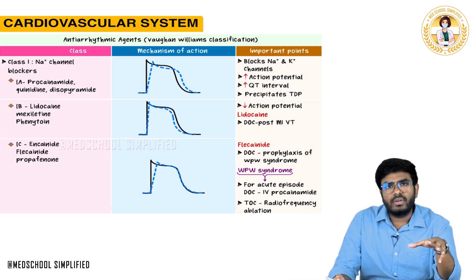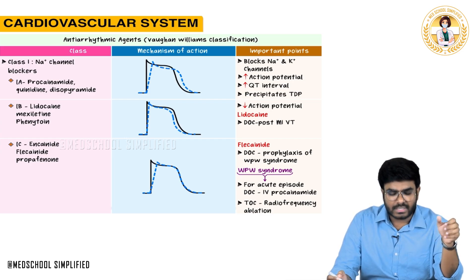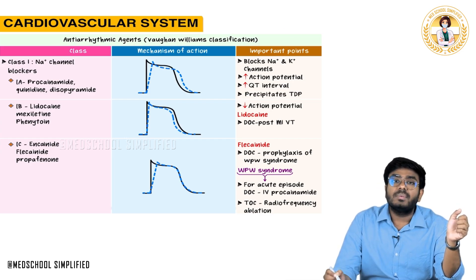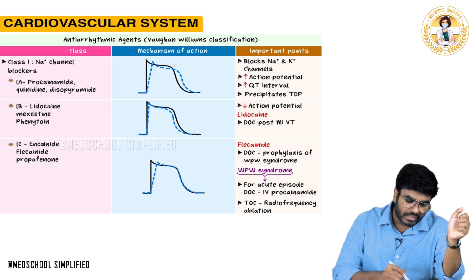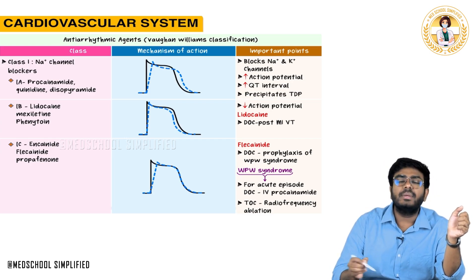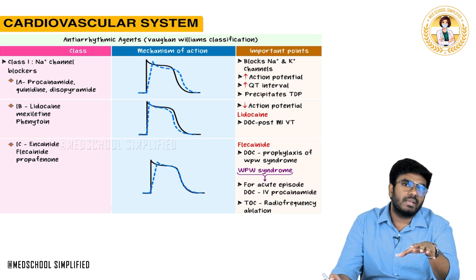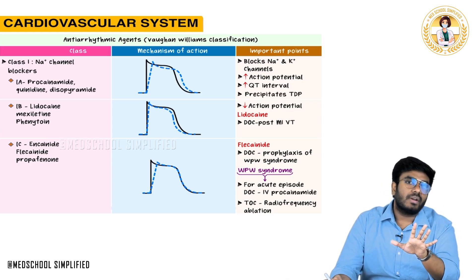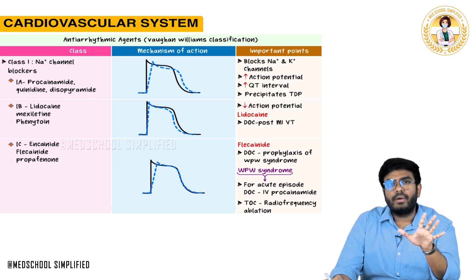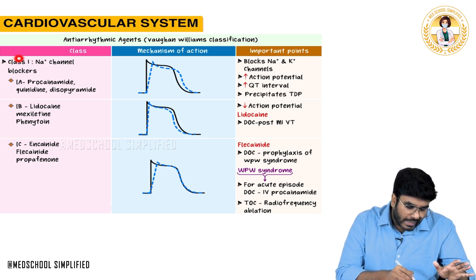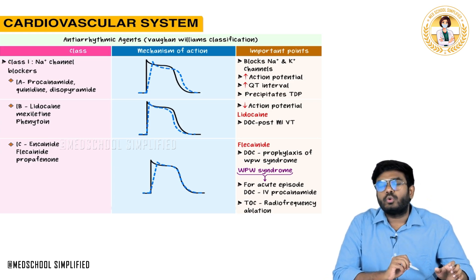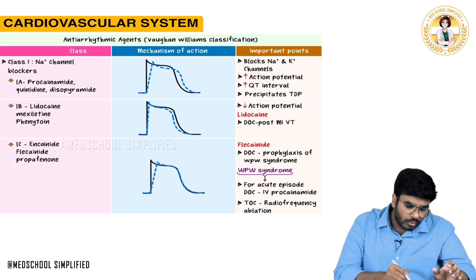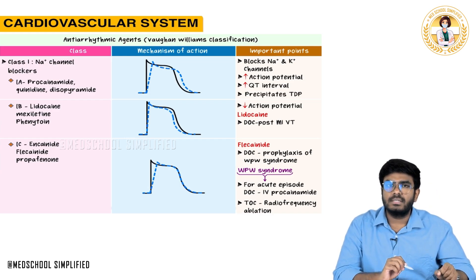The classification we follow for anti-arrhythmic drugs is the Vaughan-Williams classification. According to Vaughan-Williams classification, there are five different classes. Class 1 anti-arrhythmic drugs are sodium channel blockers — they block the sodium channels.